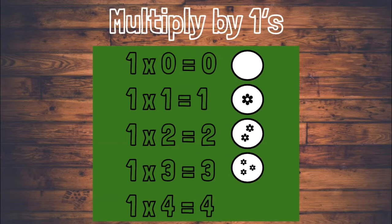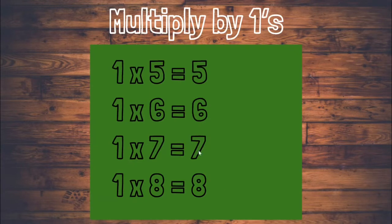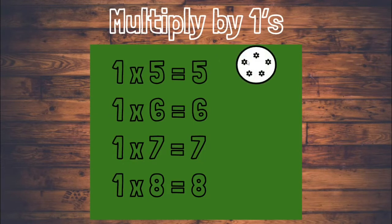One times four equals four. We need one group with four flowers inside of the group, so we know that one times four equals four. One times five equals five. We need one group with five flowers inside of the group, which gives us the product five.